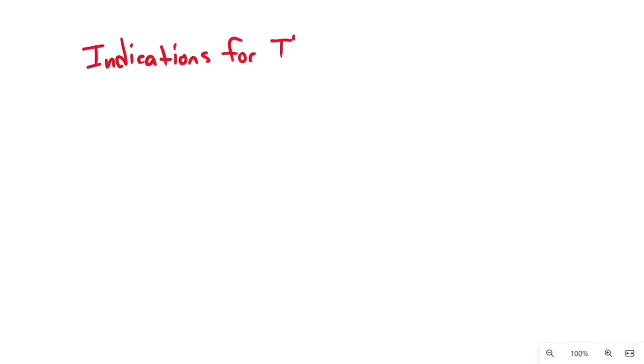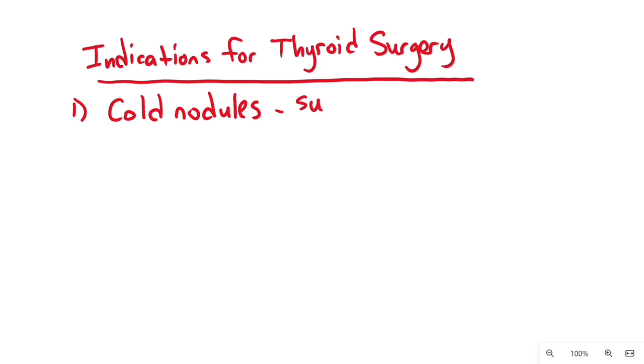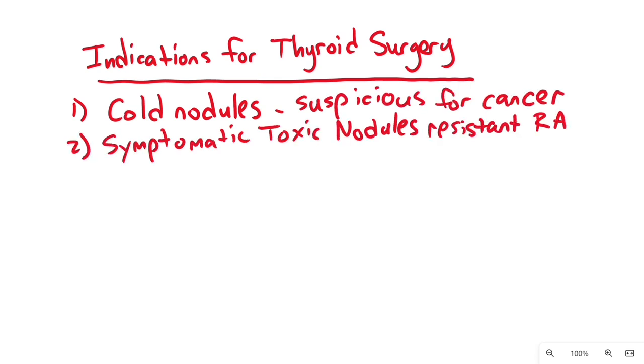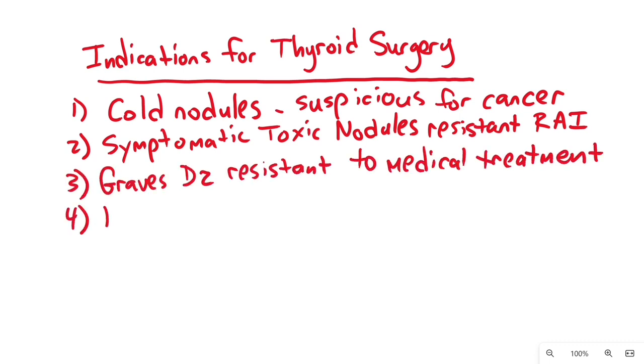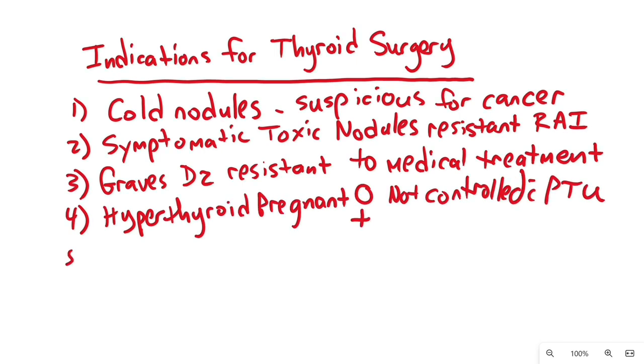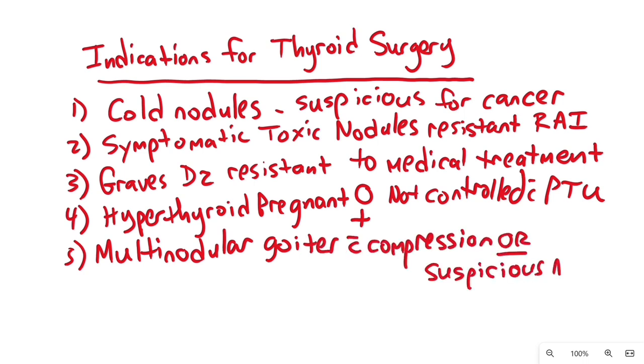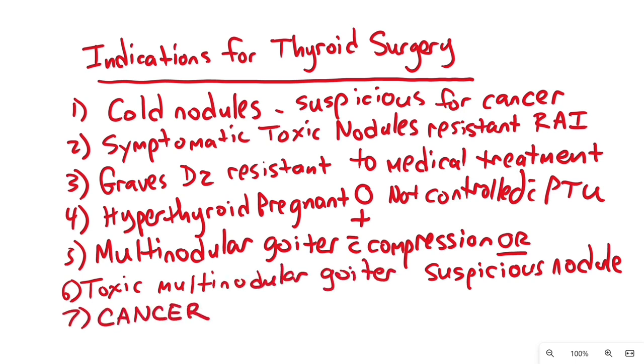Okay, to recap, indications for thyroidectomy surgery include cold nodules since they are suspicious for cancer, symptomatic toxic nodules resistant to radioactive iodine, Graves disease not responsive to medical treatment, hyperthyroid pregnant patients not controlled with PTU, multinodular goiter with compressive symptoms or a suspicious nodule, toxic multinodular goiters, and obviously malignancy, which we will talk about more in another video. That's it for benign thyroid. Thanks.